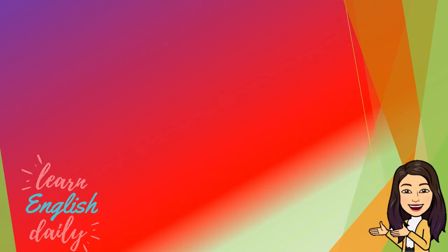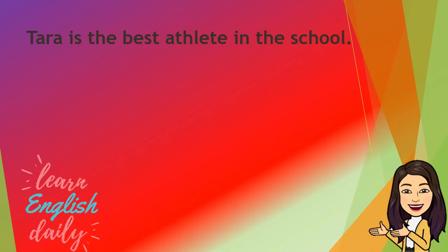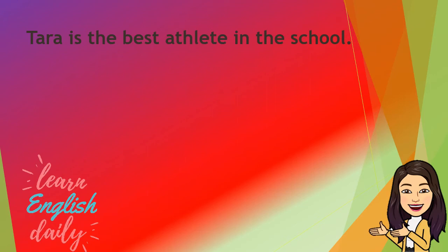Let us use these irregular adjectives in a sentence. Tara is the best athlete in school. The irregular adjective here is best, and it is in superlative form. We compared Tara to all the athletes in the school.